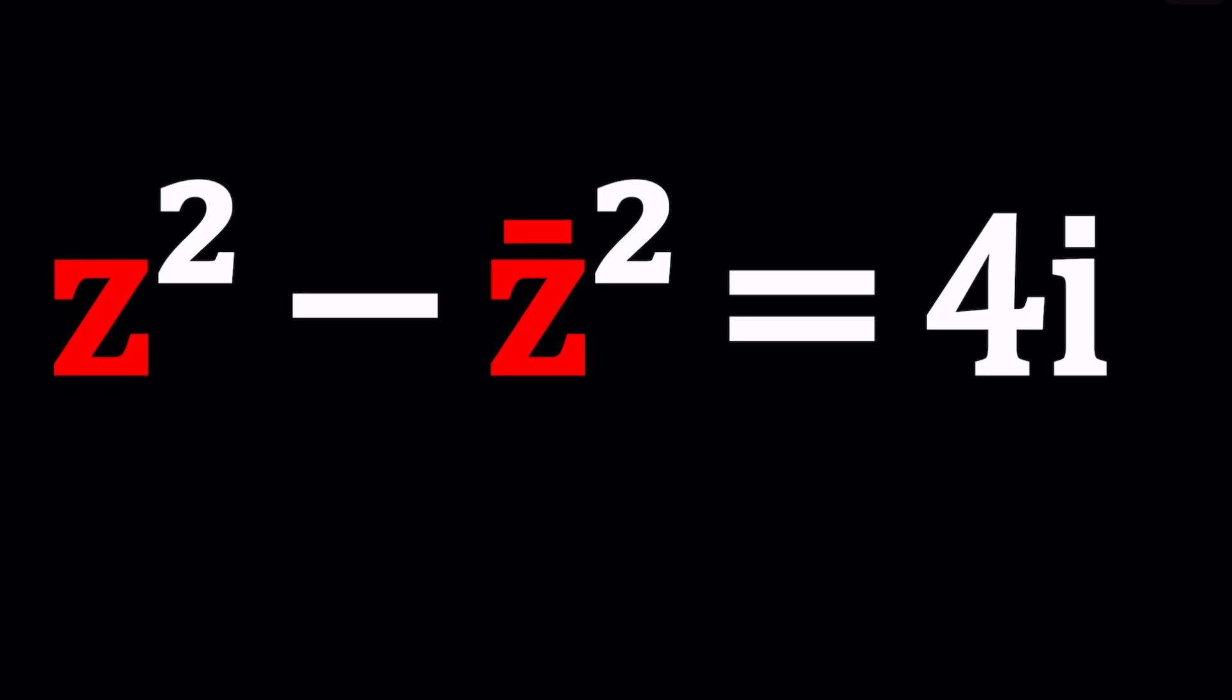We have z squared minus z bar squared equals 4i and we're going to try to solve for z. In other words, we're going to try to find the complex number or complex numbers that satisfy this equation. Do you think there are any solutions? If there are any solutions, how many? Finitely many, infinitely many, a couple, maybe one. Think about that and maybe just guess at this point, and we're going to verify that.